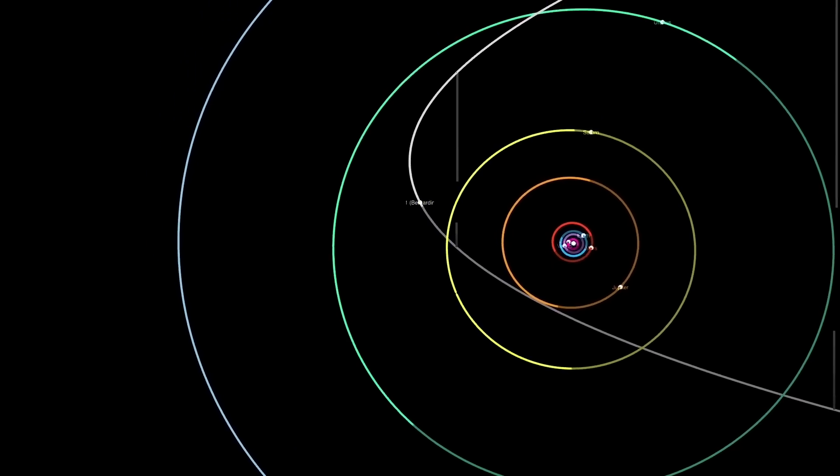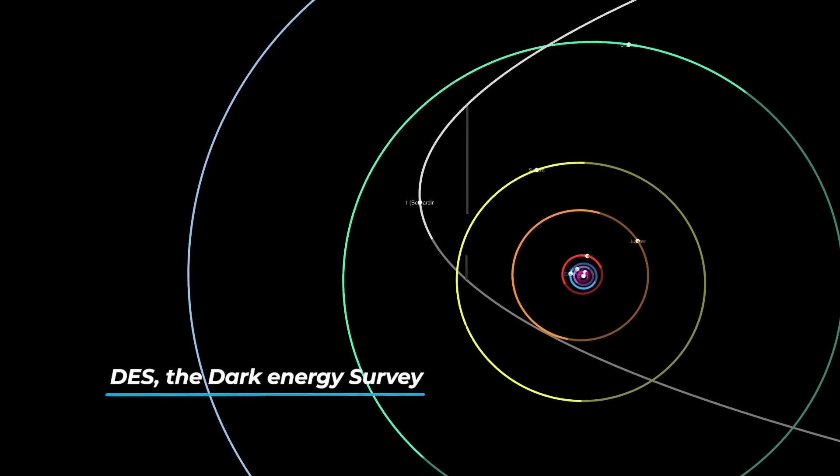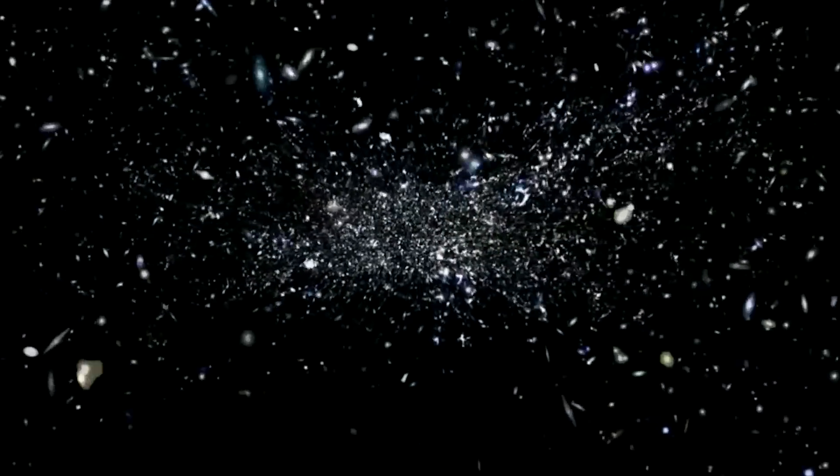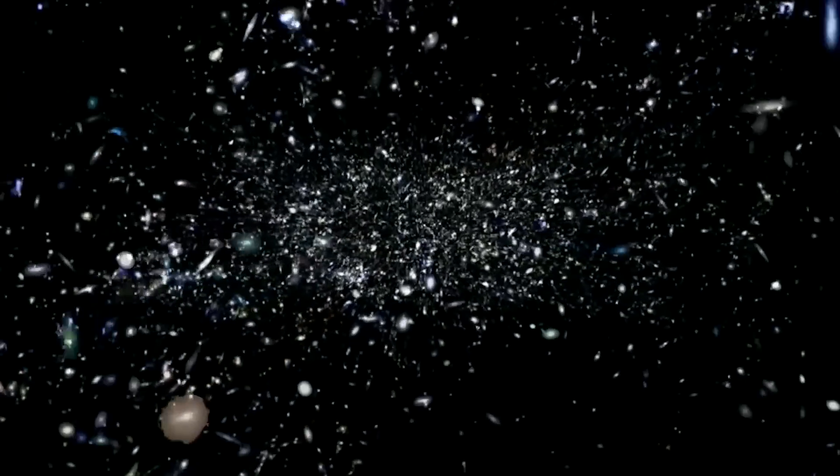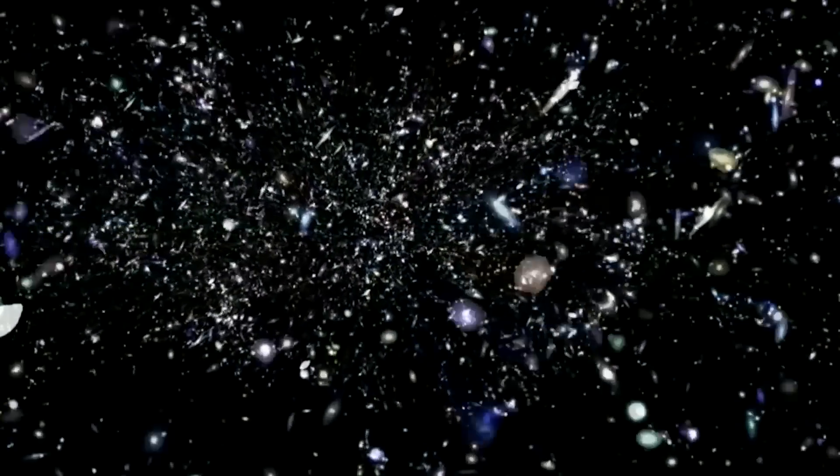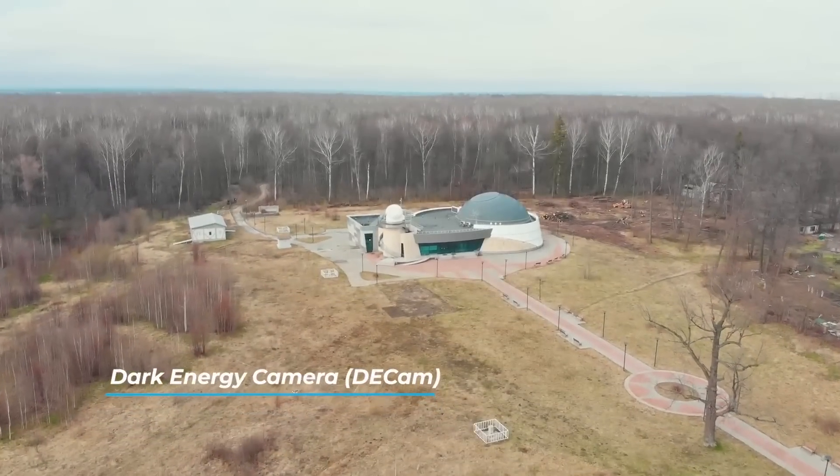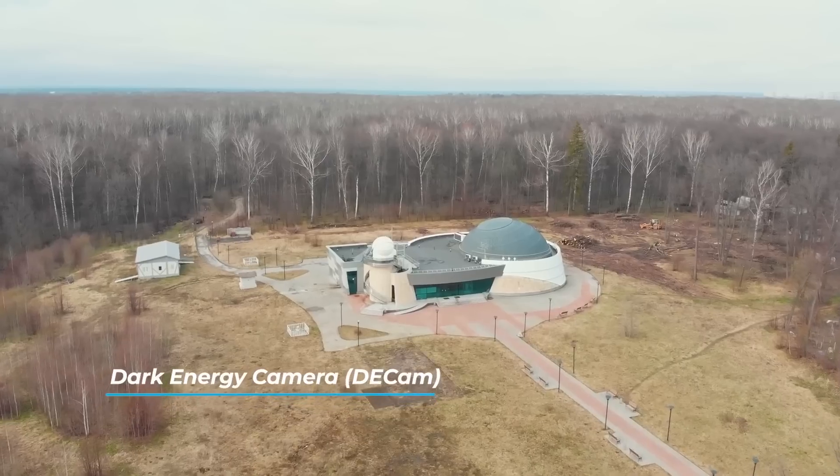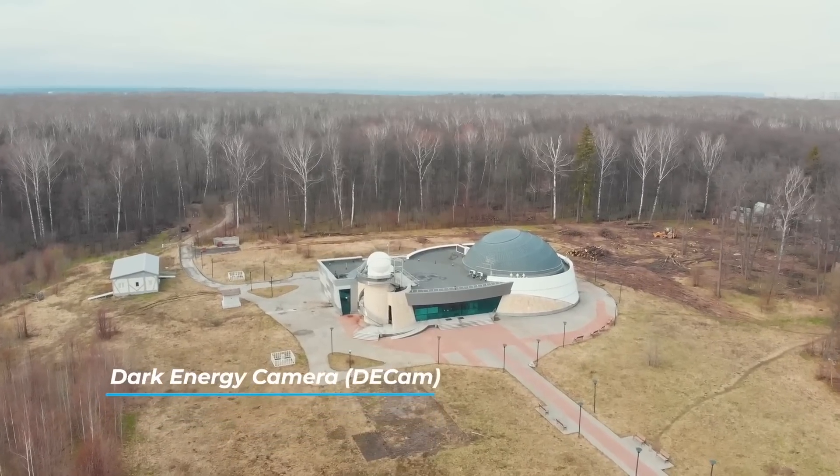But how did they find it? Astronomers were taking a look at some archival images from the DES, the Dark Energy Survey. The Dark Energy Survey is an international collaborative effort to map hundreds of millions of galaxies, detect thousands of supernovae, and find patterns of cosmic structure that will reveal the nature of the mysterious dark energy that is accelerating the expansion of our universe. DES began searching the southern skies on August 31, 2013.